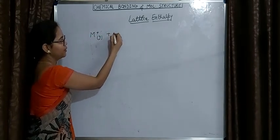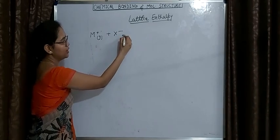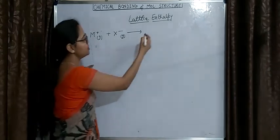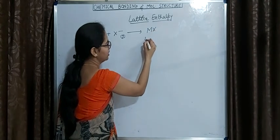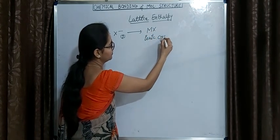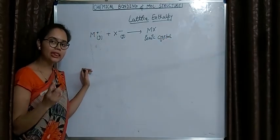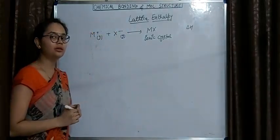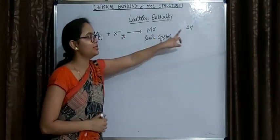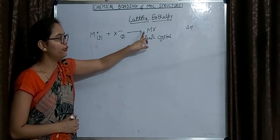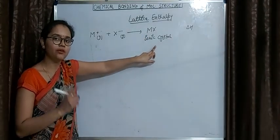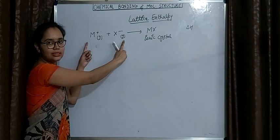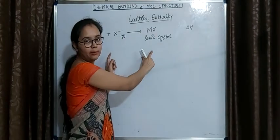This is an anion which is also in a gaseous state, and both these ions are reacting with each other and form MX, which is an ionic crystal. The enthalpy change during this process is delta H. Lattice enthalpy is the enthalpy change during the formation of one mole of ionic crystal from its constituent ions in gaseous state.